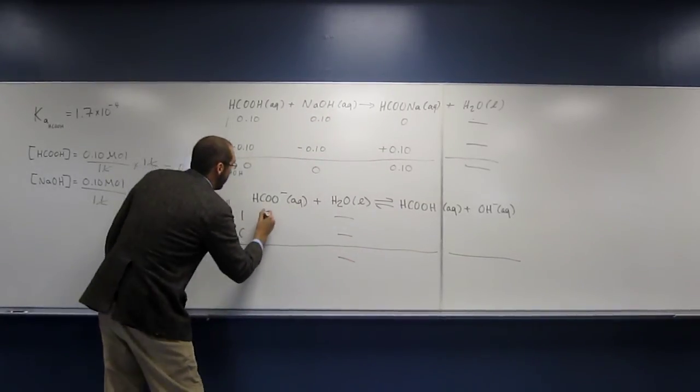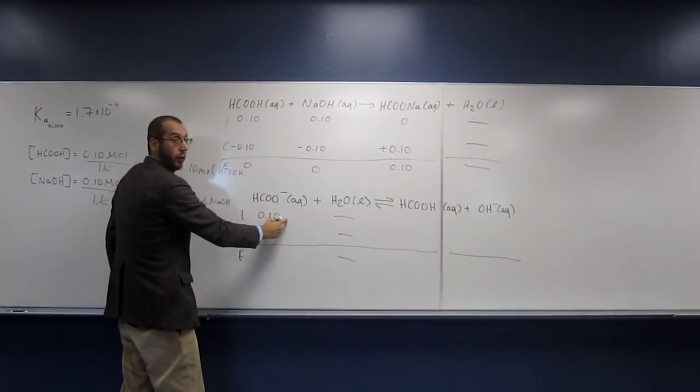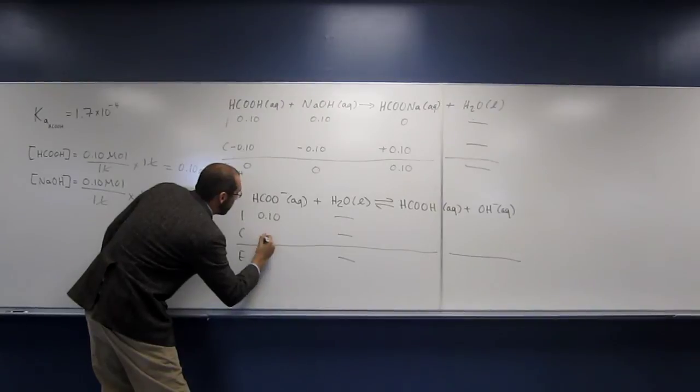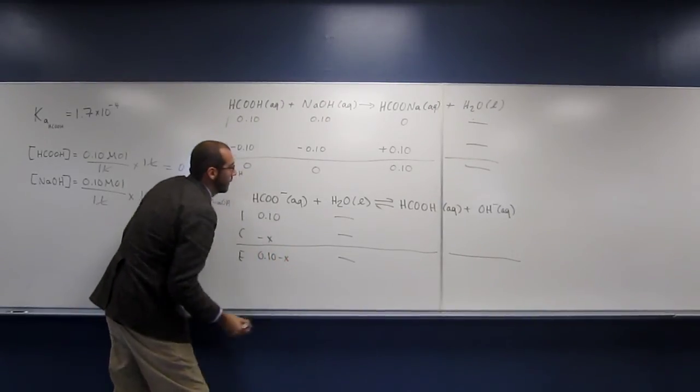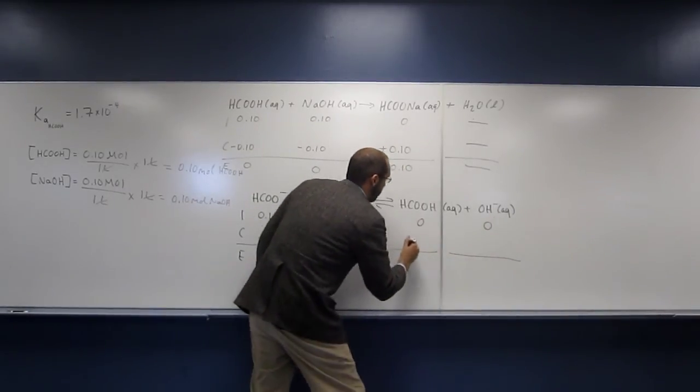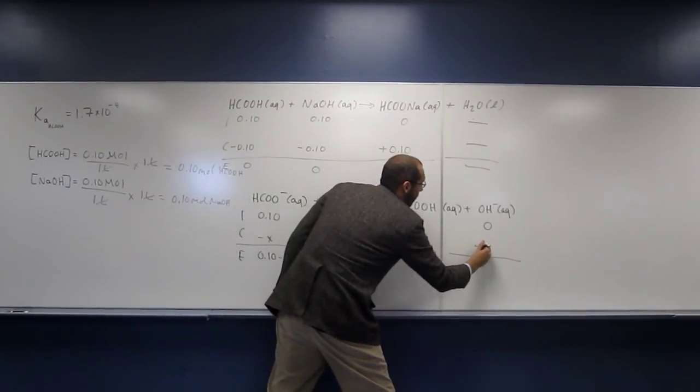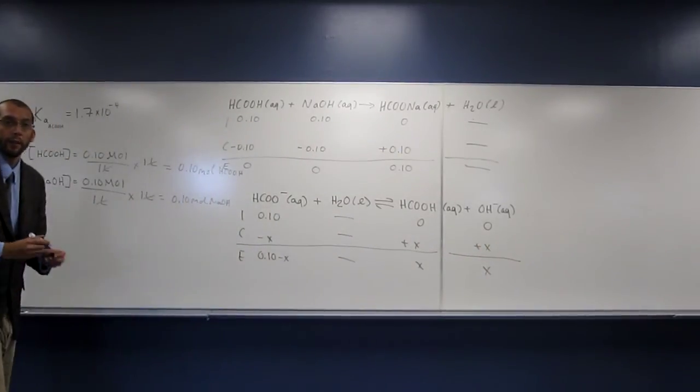So we're going to do another ice table here. So what did we start out with, 0.10 molar if you want. Change is going to be minus X, 0.10 minus X. So we started with 0, started with 0, plus X, plus X, so we got X, and X, like that.